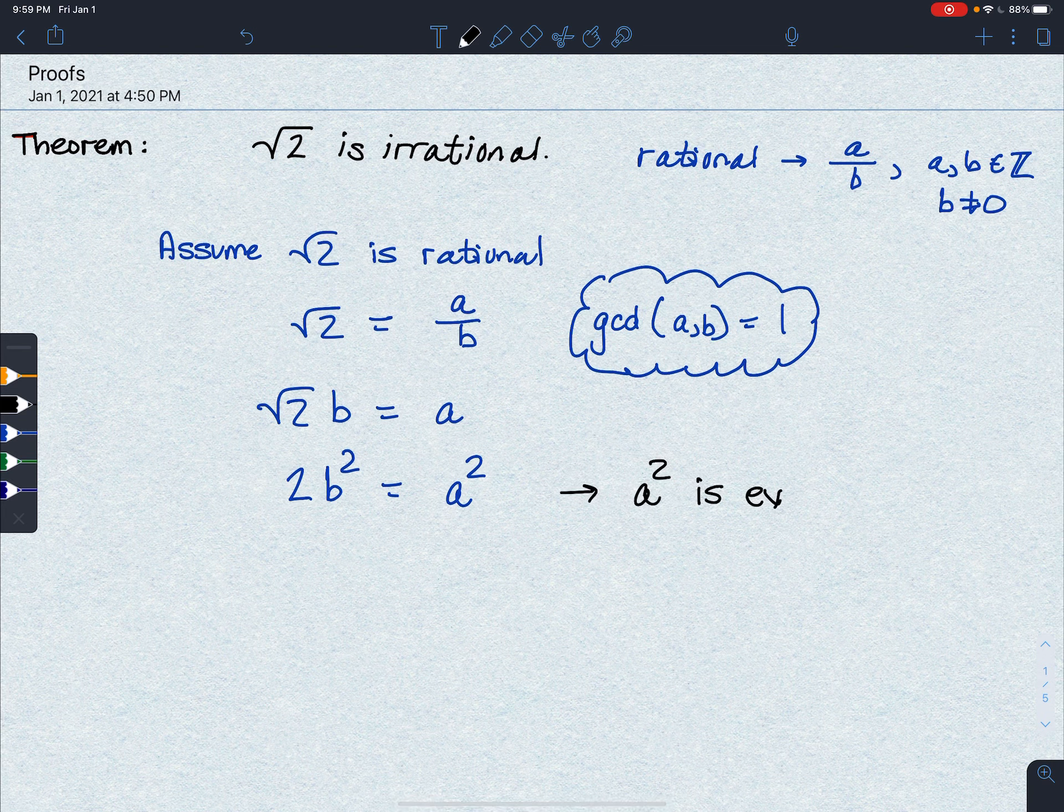And would you look at this? This is now saying that b is even because it's 2 times something else.